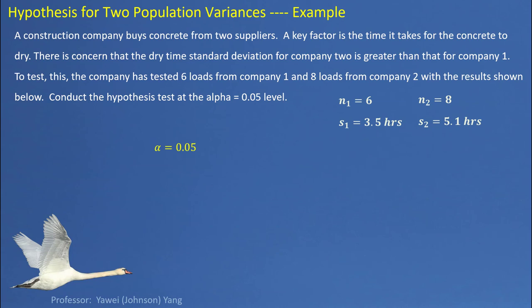Here's another example. A construction company buys concrete from two suppliers. A key factor is the time it takes for the concrete to dry. There is concern that the dry time standard deviation for company two is greater than for company one. To test this, the company tested six loads from company one and eight loads from company two. The standard deviation for the six loads was 3.5 hours to dry, and the standard deviation for eight loads was 5.1 hours to dry. We use 5% as the significance level.